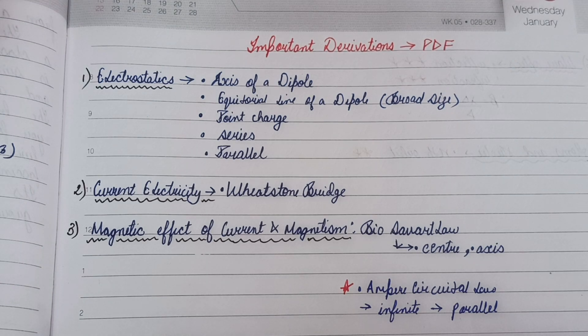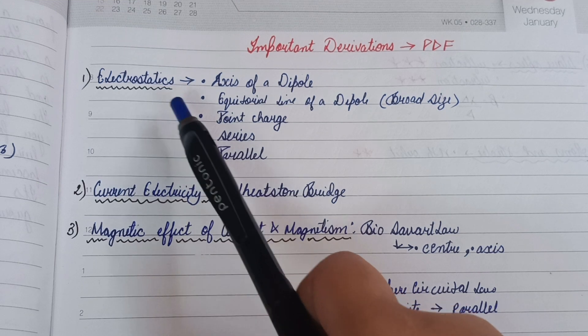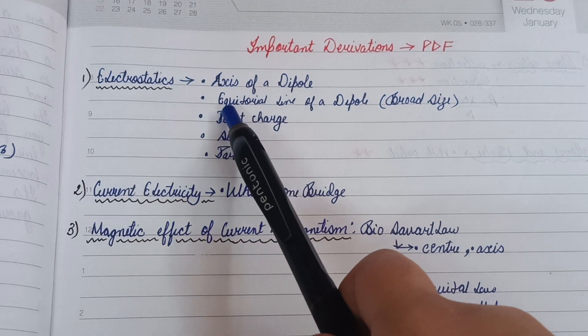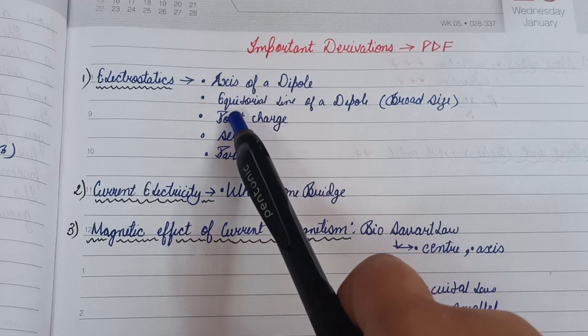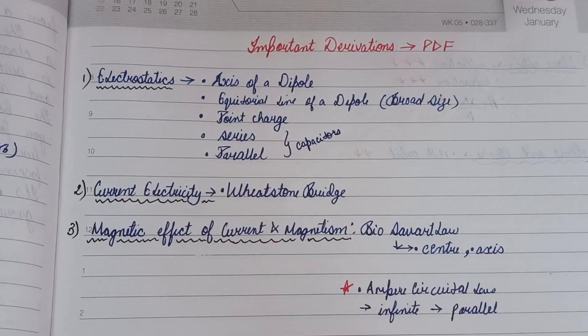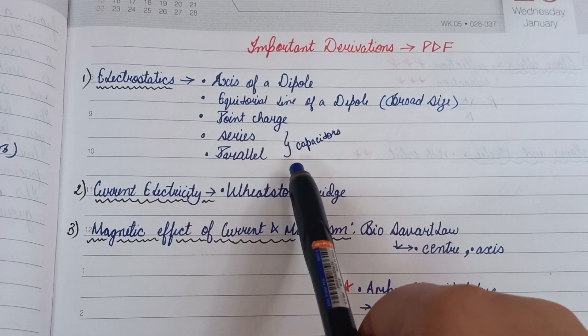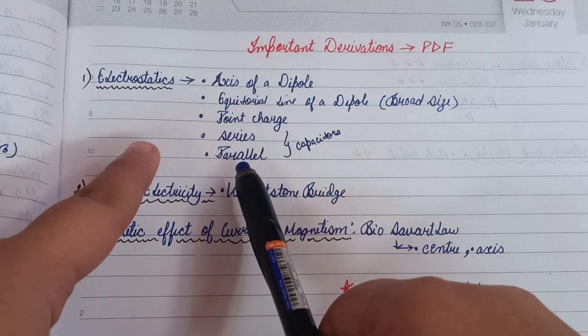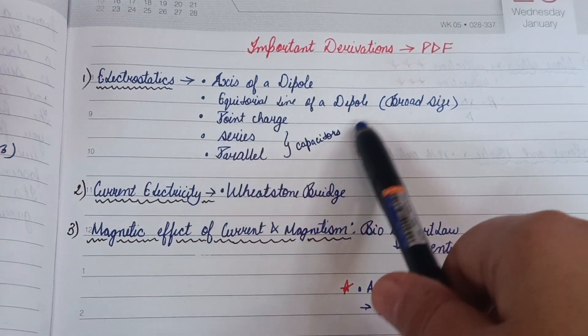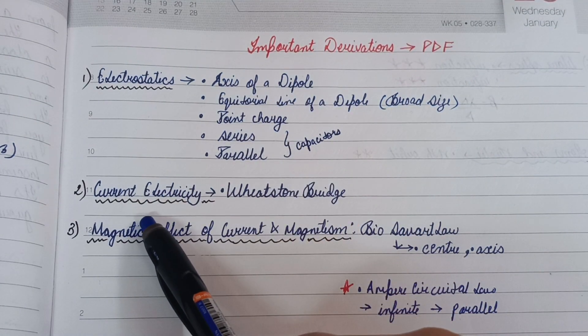From the first chapter Electrostatics, you have to do these five derivations: axis of a dipole, equatorial line of a dipole, point charge, and then the capacitor one which is the series and parallel. From the Electrostatic chapter, these five derivations are the most important ones for the 2025 batch.